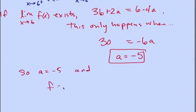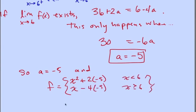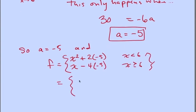So a equals negative 5, and f(x) equals x squared minus 10 when x is less than 6, and x plus 20 when x is greater than or equal to 6.